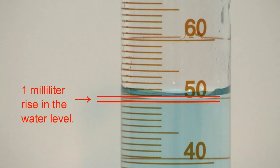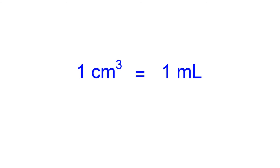Therefore, once again, we see that the volume of one cubic centimeter is equal to the volume of one milliliter.